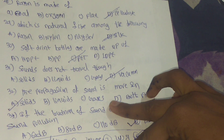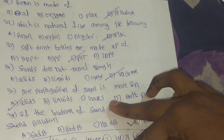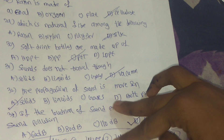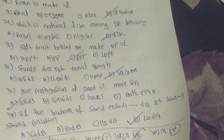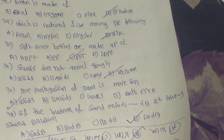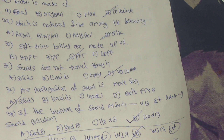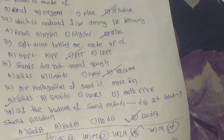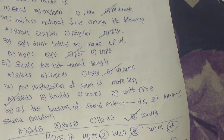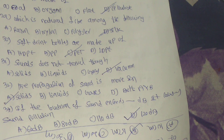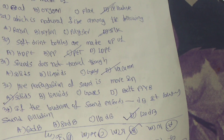31st question: sound does not travel through? Answer: option D, vacuum. 32nd question: the propagation of sound is fastest in? Answer: option A, solids. Last question, 33rd: if the loudness of the sound exceeds blank dB, it causes sound pollution. Answer is option D, 120 dB.